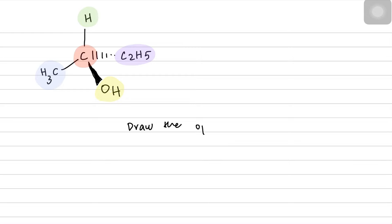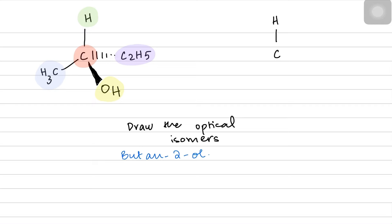Now draw the optical isomers of the initial butan-2-ol. Butan-2-ol was also having one chiral carbon. In order to draw a non-superimposable mirror image, just draw your carbon and draw the exact mirror image of the structure.